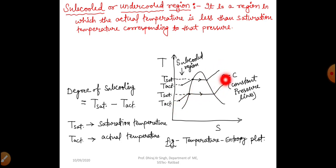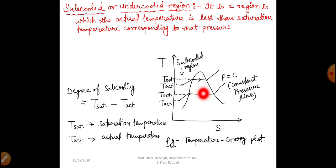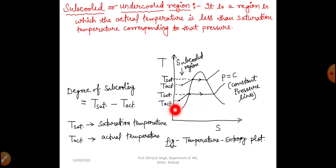On the constant pressure line, the saturation temperature is greater than the actual temperature. Saturation temperature is the temperature at which the phase change process takes place — the temperature at which liquid converts into vapor or vapor converts into liquid. So the degree of subcooling is T saturation minus T actual, where T saturation is greater than T actual in this subcooled region.